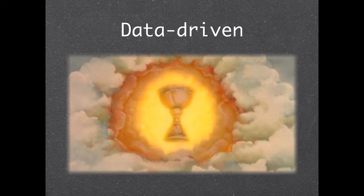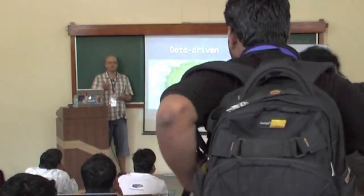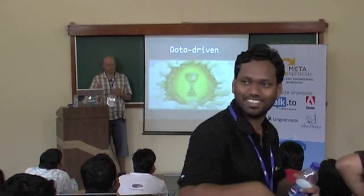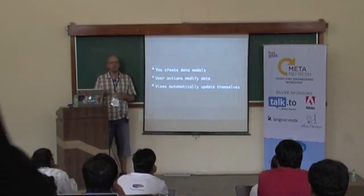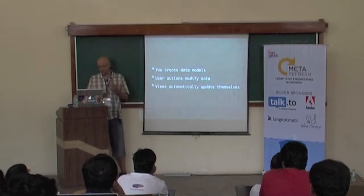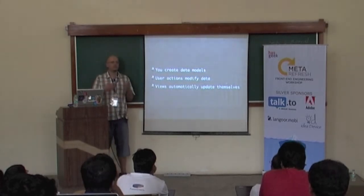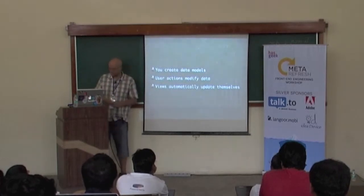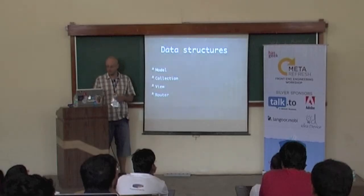This app is data driven. Usually with jQuery you create your markup and then you add your callbacks, and at some point it gets messy because you don't know what is the beginning or how it's working. Here it's data driven — first you take your application, you analyze it and say okay, these are my data models. When users interact with your application, they will directly modify data, and this data will send events. Views — what you see — will automatically update themselves. We use four different data structures from Backbone: the models, the collections, the views, and the router.